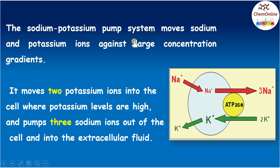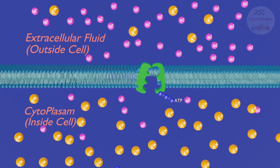In the sodium potassium pump system, sodium and potassium ions move against large concentration gradients. It moves two potassium ions into the cell where potassium levels are high, and pumps three sodium ions out of the cell and into the extracellular fluid where the concentration of sodium ions is more. This means the transport process is occurring from a lower to a higher concentration, and that is why it requires energy powered by ATP and catalyzed by the enzyme ATPase.